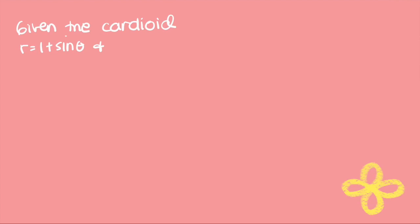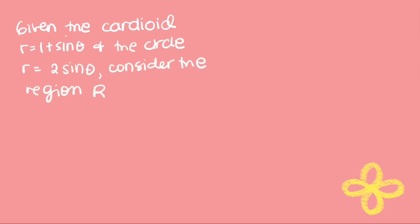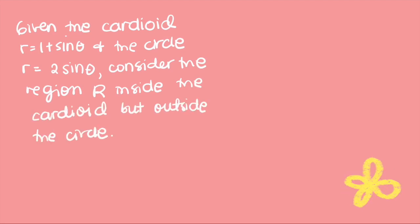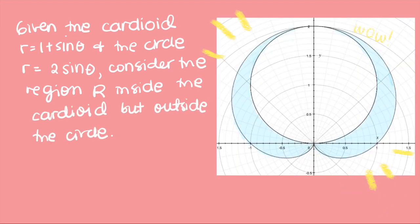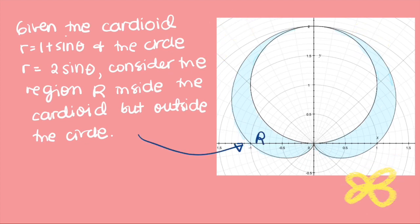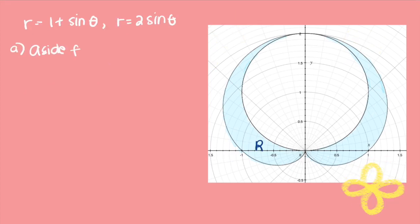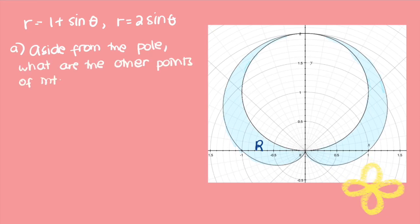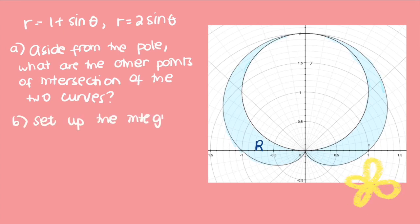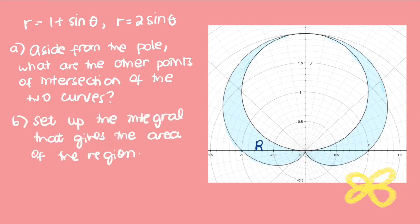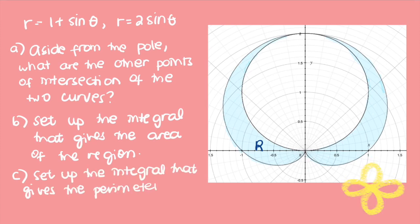Given the cardioid r equals 1 plus sine theta and the circle r equals 2 sine theta, consider the region R that is inside the cardioid but outside the circle. Aside from the pole, we are asked for other points of intersection of the two curves, to set up the integral for the area of region R, and to set up the integral for the perimeter of region R.